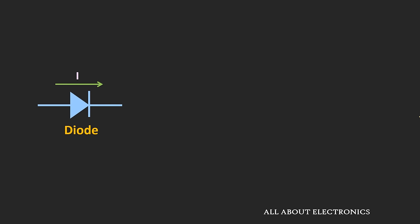In the previous videos of the diode, we learned that the diode allows the flow of current only in one direction and it blocks the current in the reverse direction. Now this property of the diode is very useful in certain applications. One such application is AC to DC conversion. The process of converting the AC voltage signal into DC voltage is known as rectification, and the circuit used for this is known as the rectifier.